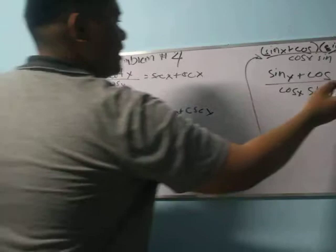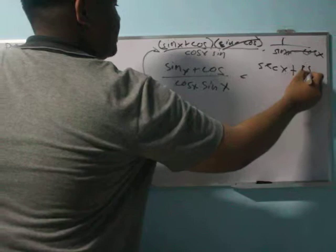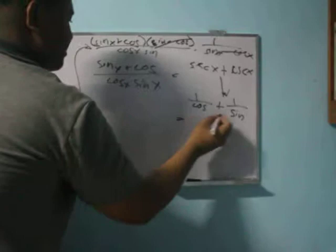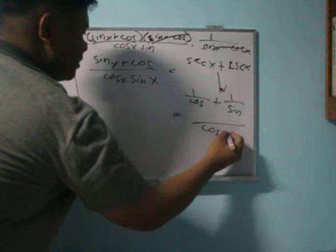For the right side, sec x plus csc x can be written as 1 over cos x plus 1 over sin x.